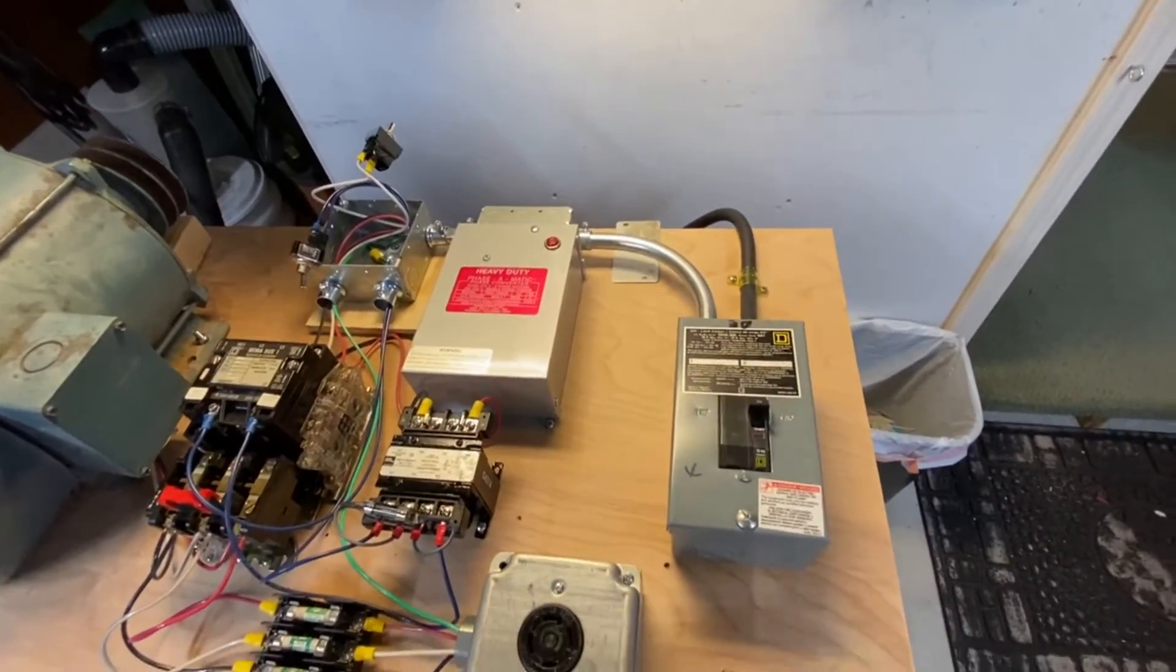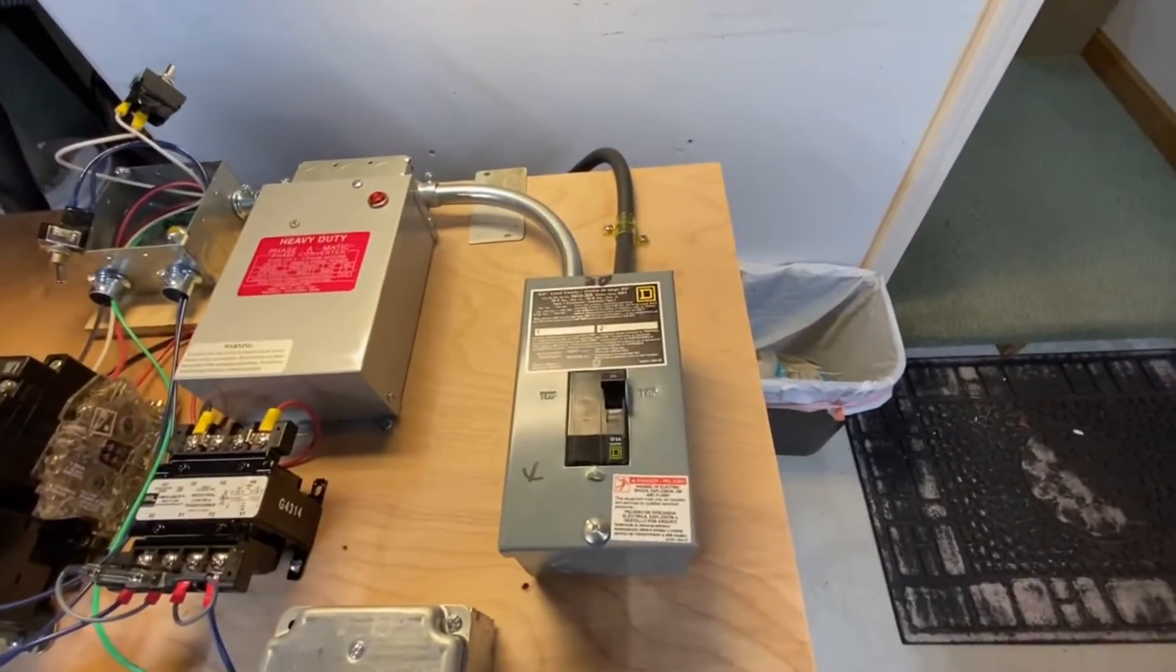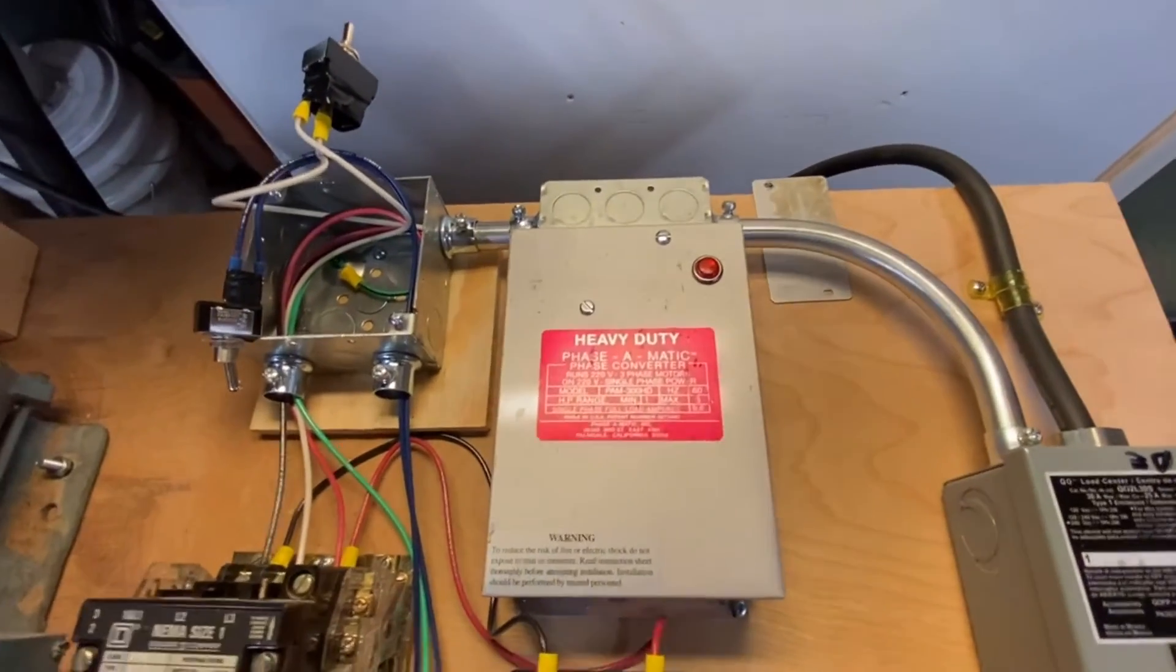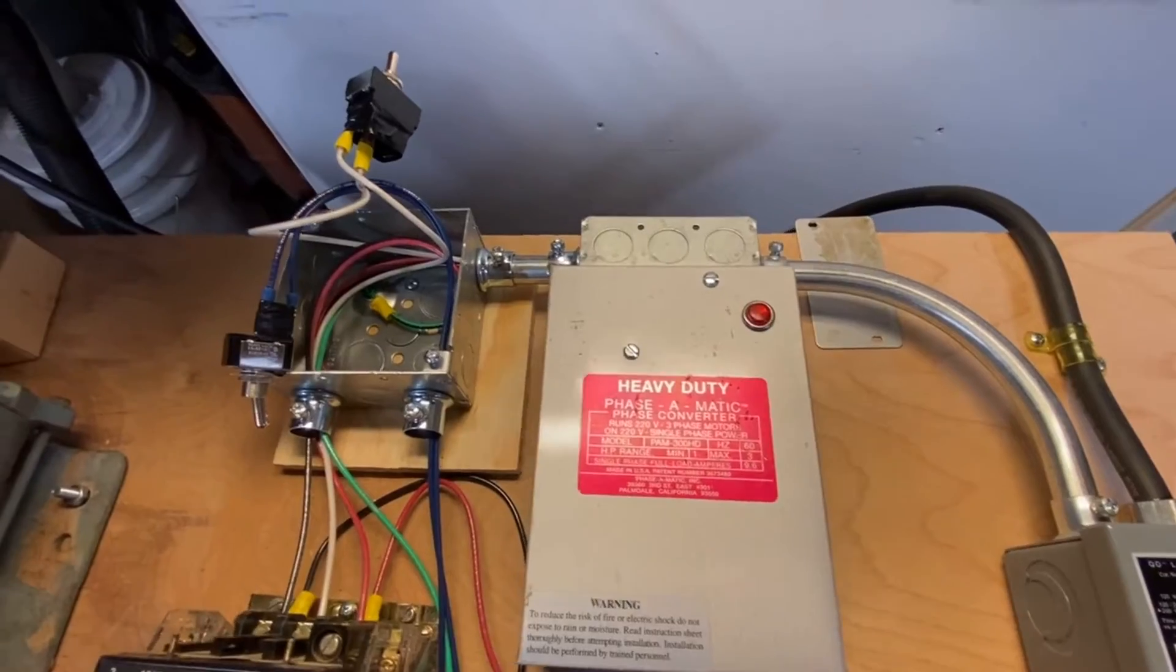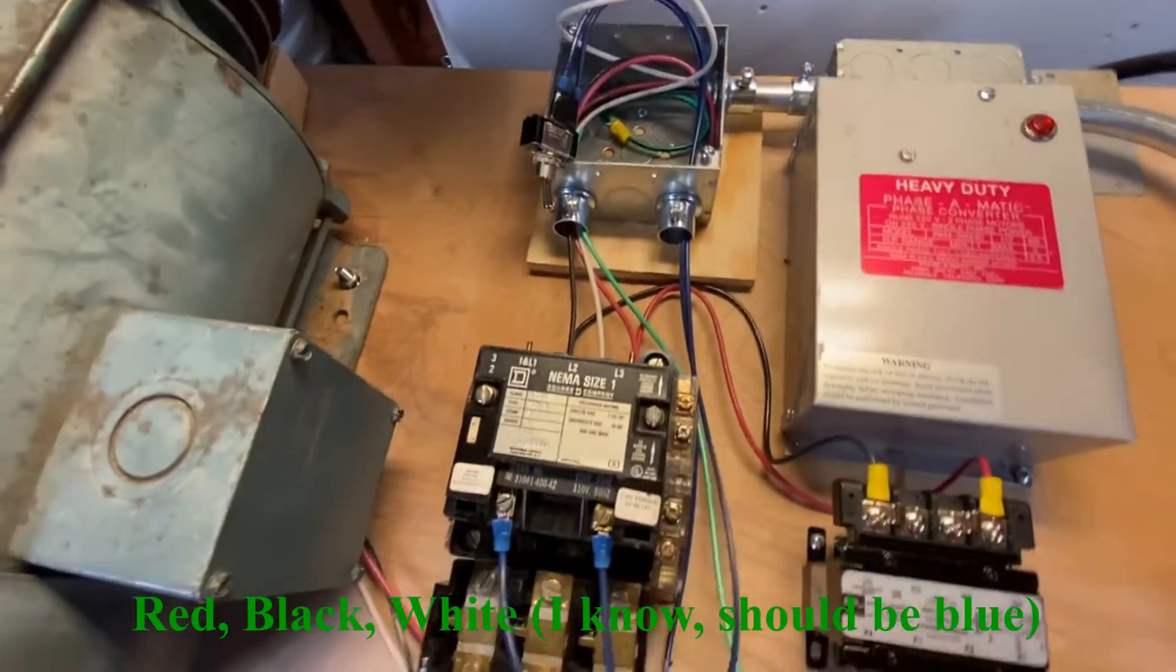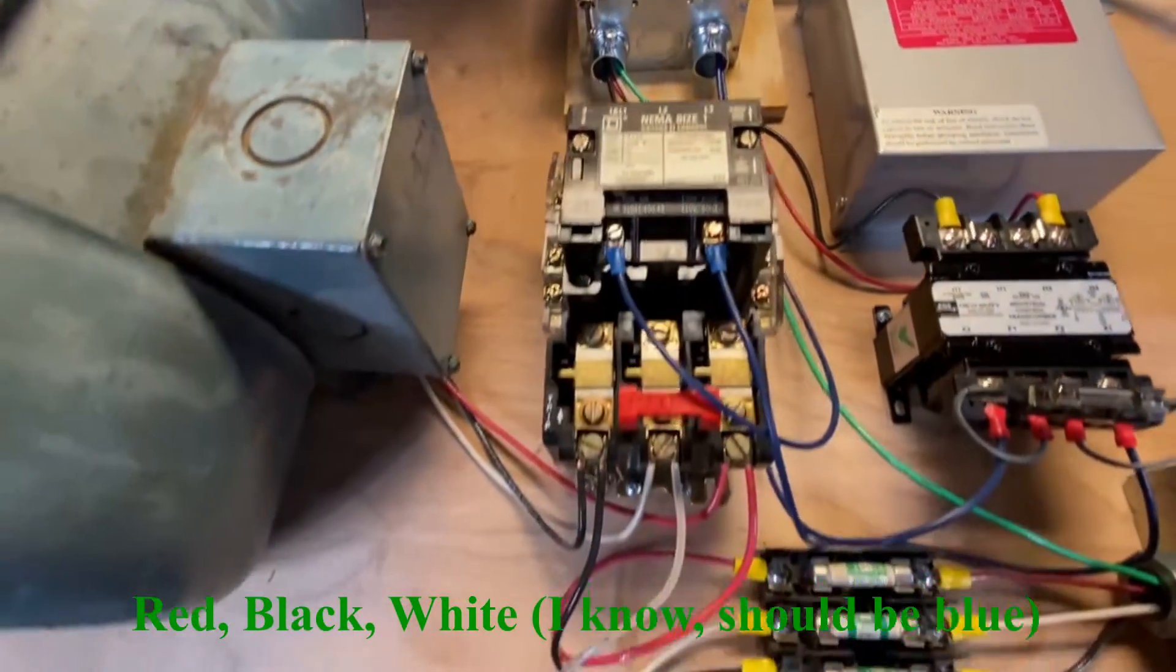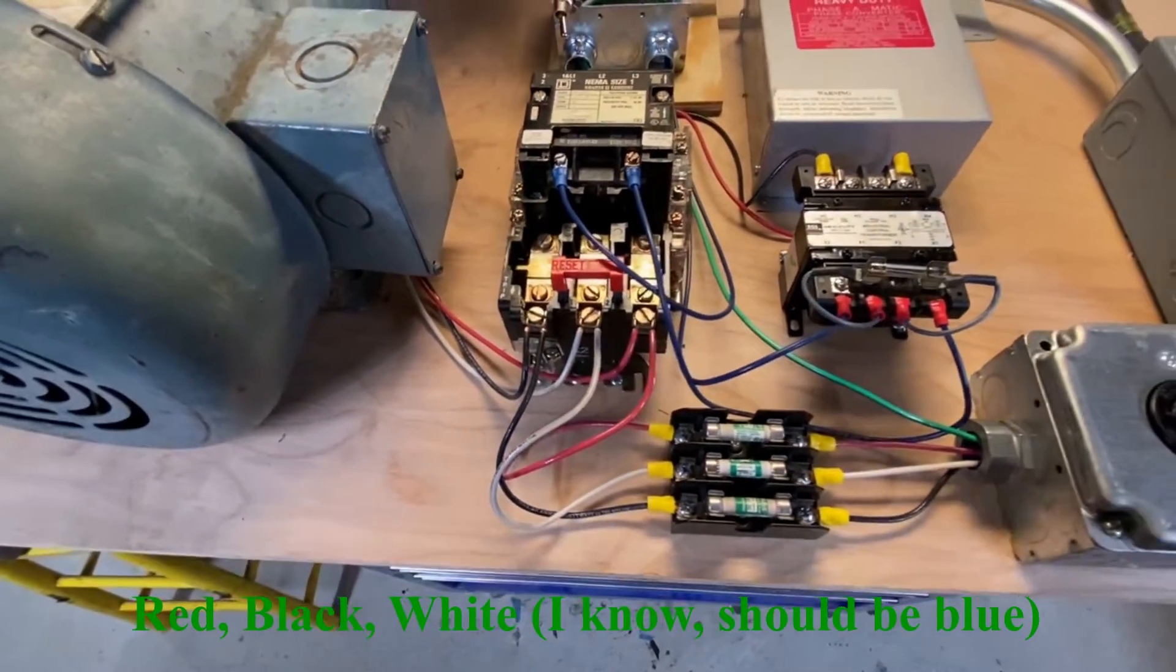Anyway, backing up and continuing the tour. So, power comes in here, goes through this Phase-O-Matic, two wires in, three wires out. Those three wires pass through there, come into the contactor on this side, come out of the contactor on this side, and go two places, over here to the motor, and then over here to the load.